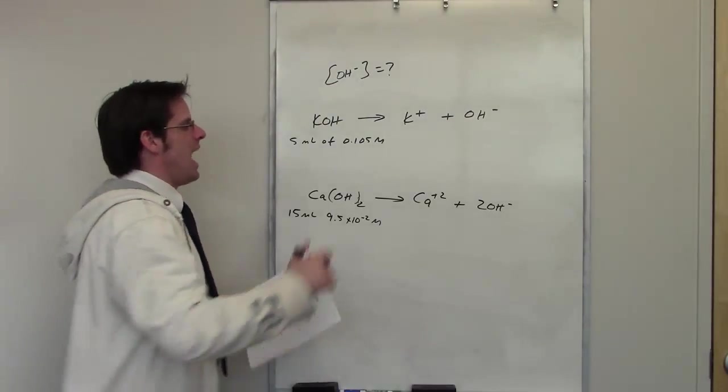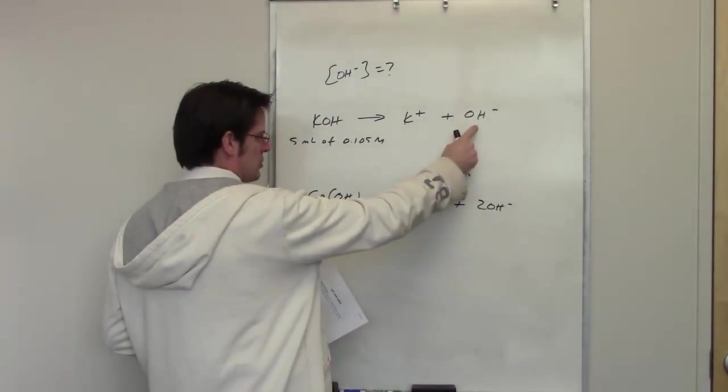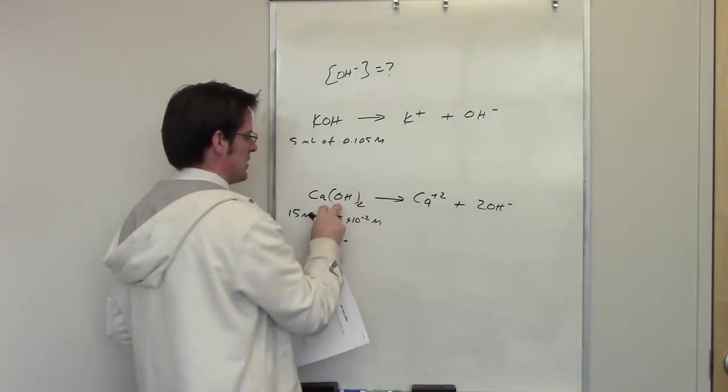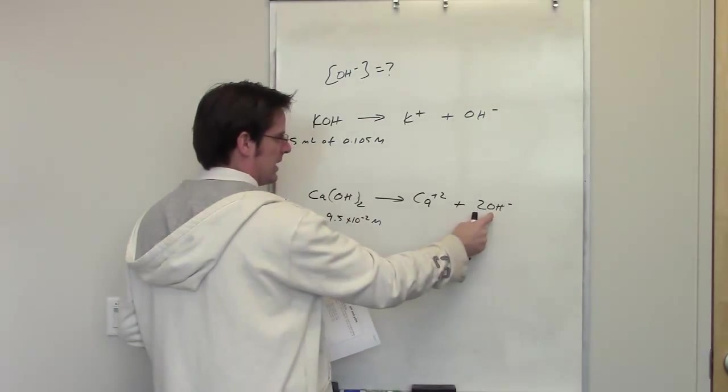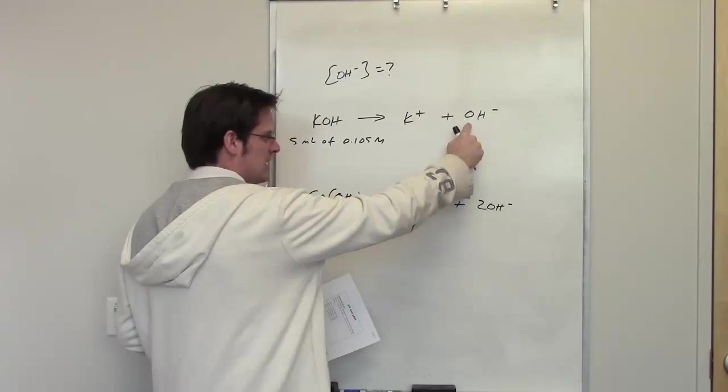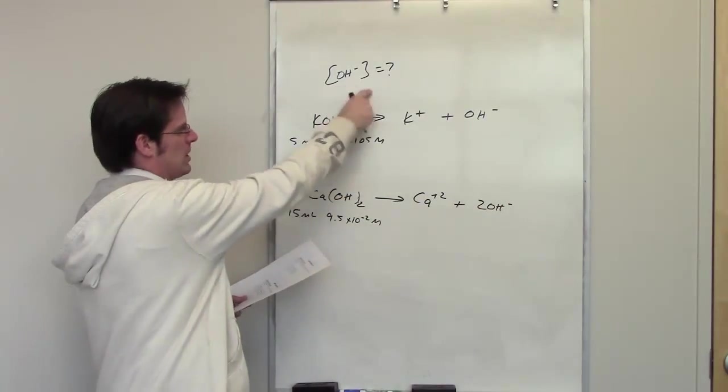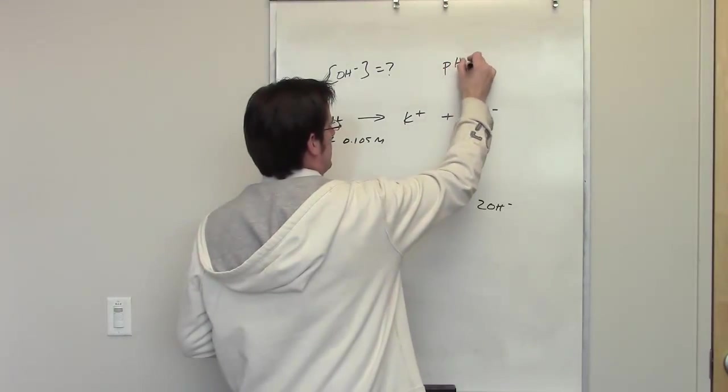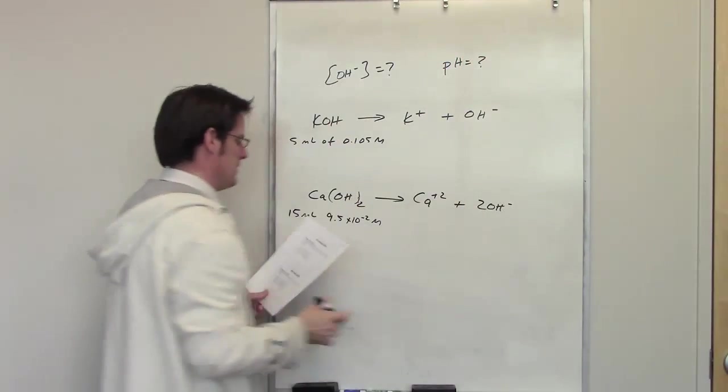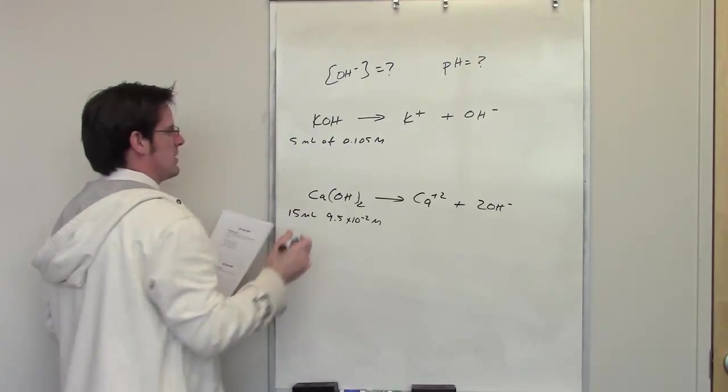What I need to do is determine how much hydroxide is formed from the KOH and then separately how much hydroxide is formed from the calcium hydroxide. I get the answer for this and this, I then add them together, that's the final concentration of hydroxide. It also has to be separately to figure out the pH which we can do in a heartbeat once we've got that done. So let's see if we can figure this out.